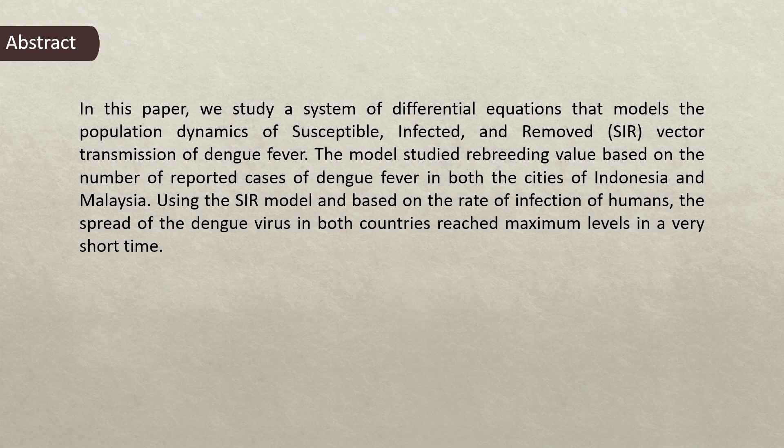The abstract of the paper is basically the summary of the paper. In this paper, we study a system of differential equations that models the population dynamics of susceptible, infected, and removed vector transmission of dengue fever. The model studied the rebreeding value based on the number of reported cases of dengue fever in both cities of Indonesia and Malaysia using the SIR model.